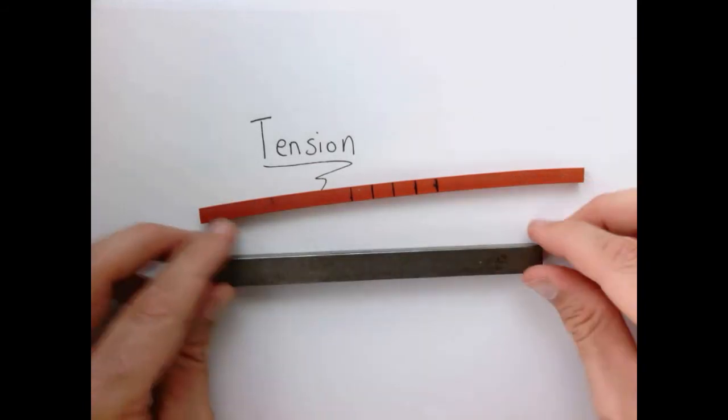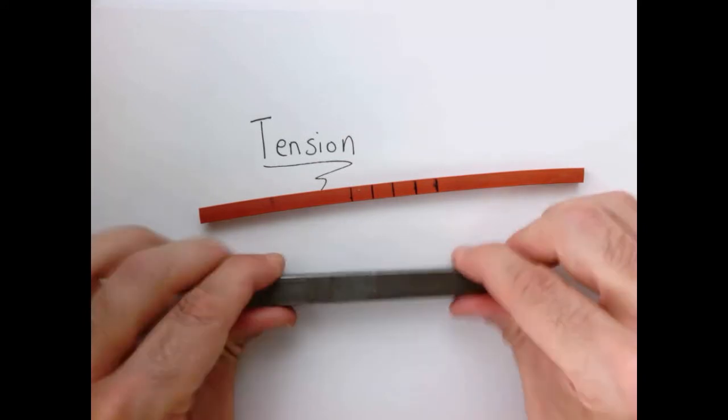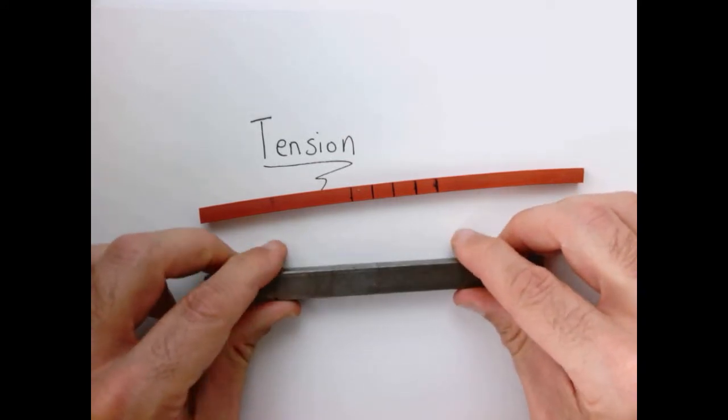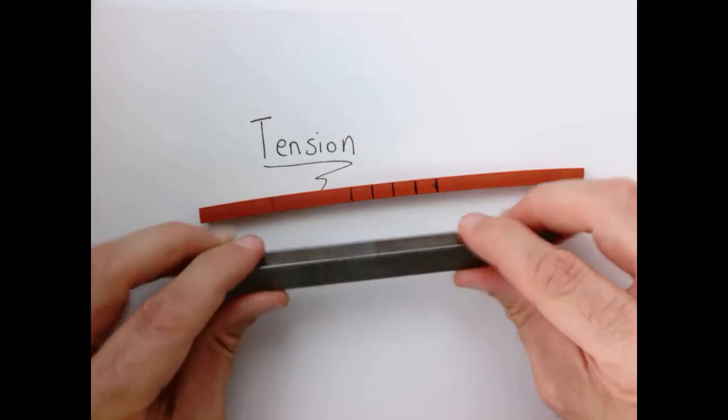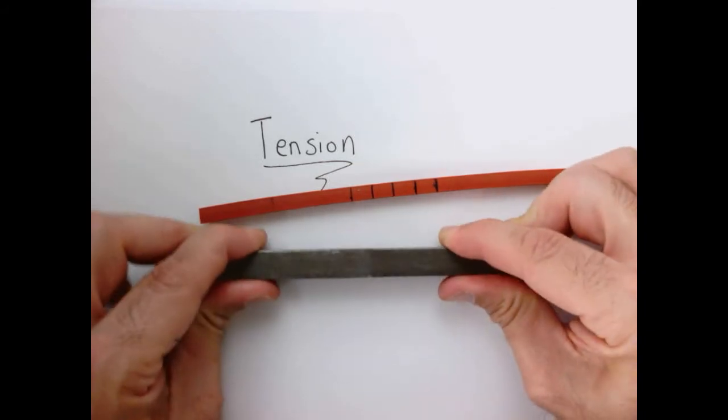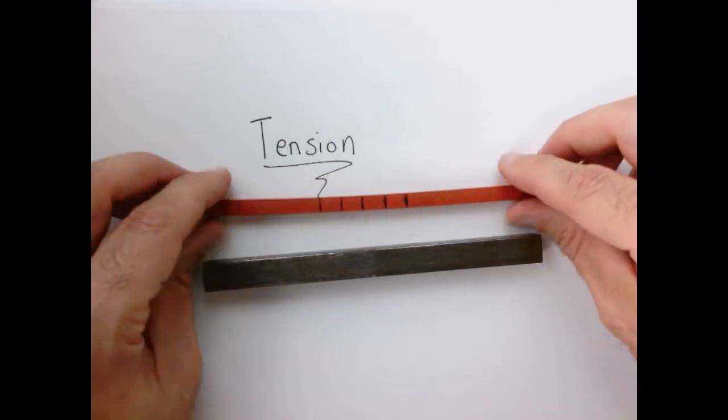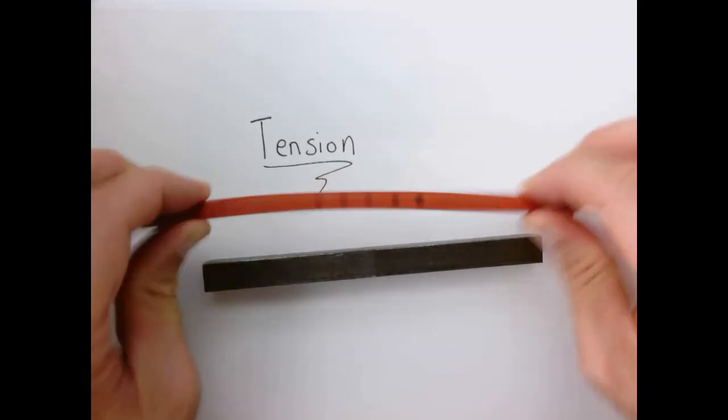I can also take a bar of steel which I have here, and I can pull on it. Now when I pull on this bar, it is elongating, it's just elongating such a tiny amount that there's no way you would ever see it on this kind of video. So this is the behavior that we want to understand: what happens to material when it's subject to tension.